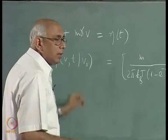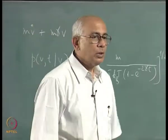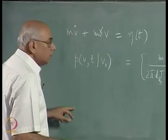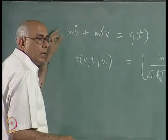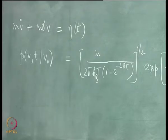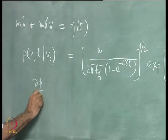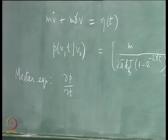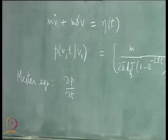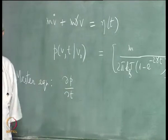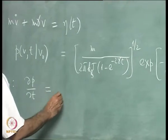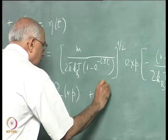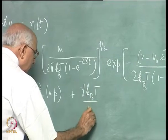The interesting thing is that this density also obeys a differential equation which looks like the diffusion equation but has an extra term. This equation and the stochastic differential equation are equivalent to each other. The equation obeyed by P is ∂P/∂t — called the master equation for the conditional density of a Markov process. In this case it is a second-order PDE equal to γ ∂/∂V (V·P) plus γ k_B T/M · ∂²P/∂V².